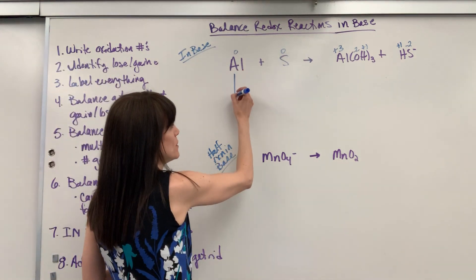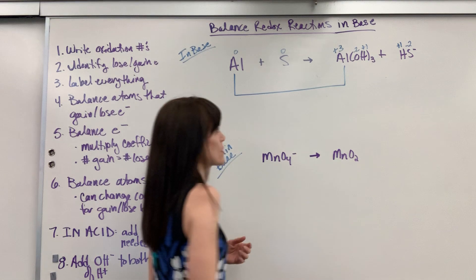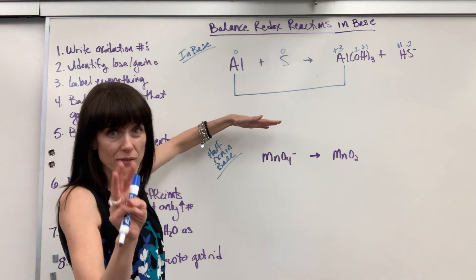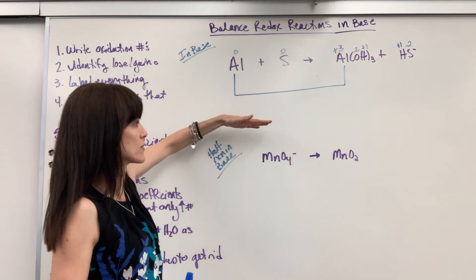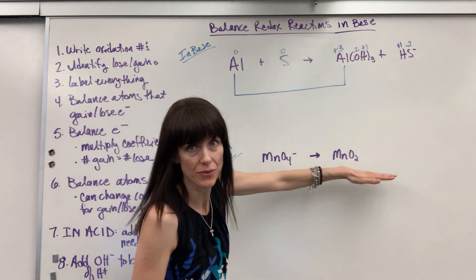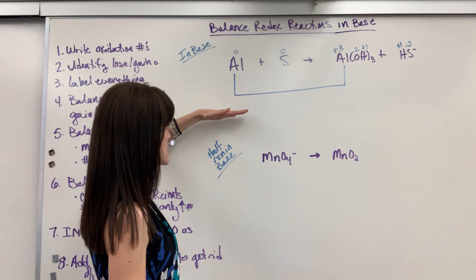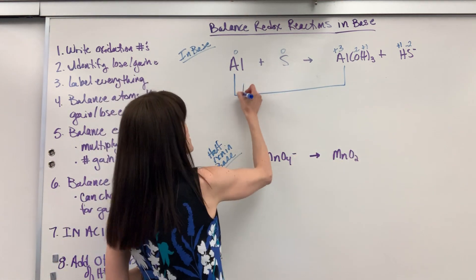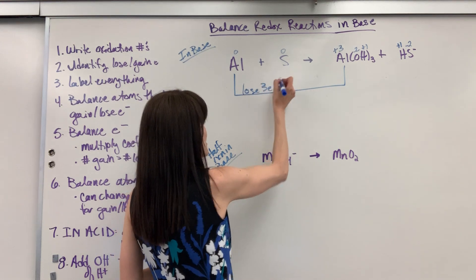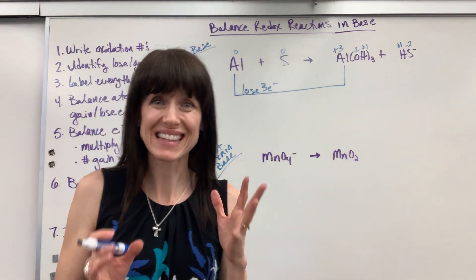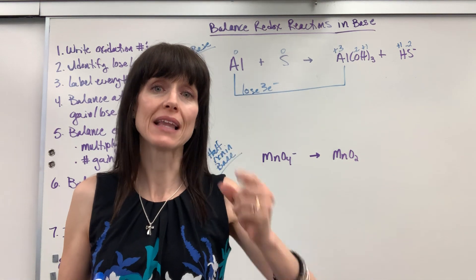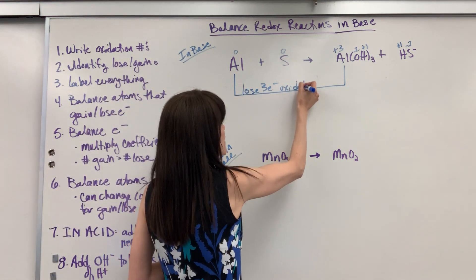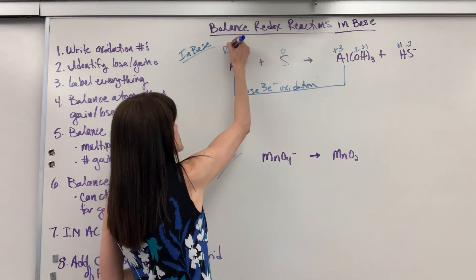Now we're going to see what changes. Aluminum goes from zero to plus three. If I'm at a perfect zero and plus three means we've lost three electrons — I'm down by three electrons. So from reactants at zero to products at plus three, we lost three electrons. Lose electrons — that's Leo. Leo the lion says GER. Lose electrons, oxidation. So this is oxidation, and whatever is oxidized is the reducing agent.